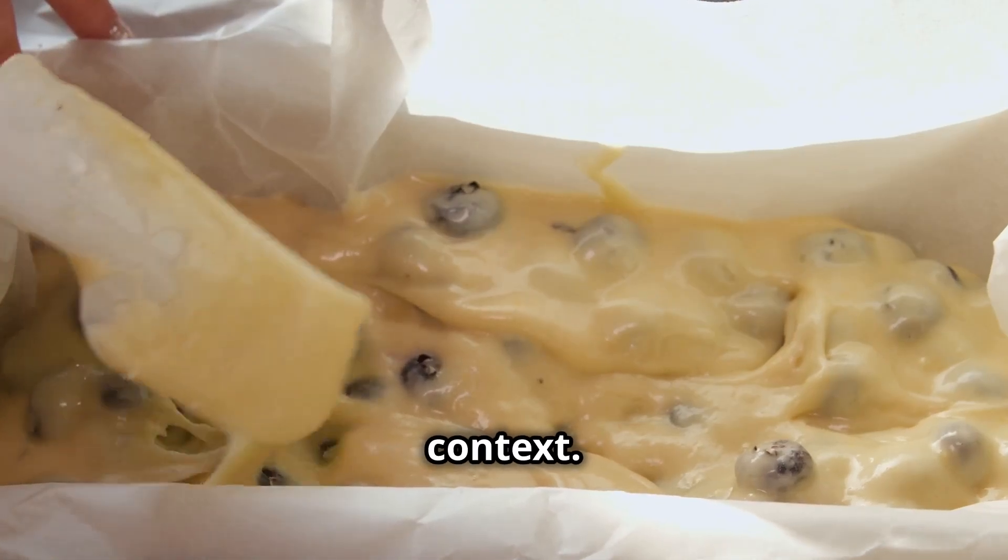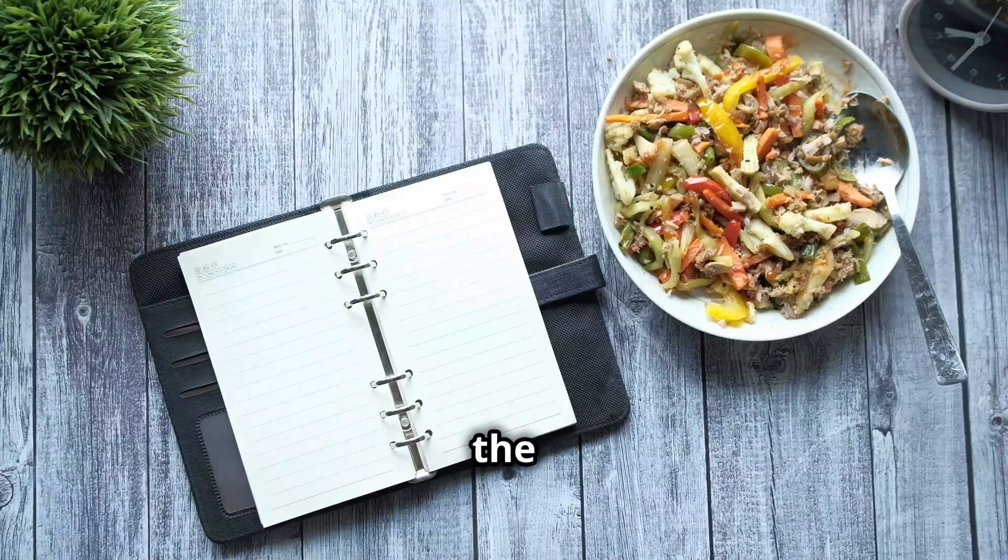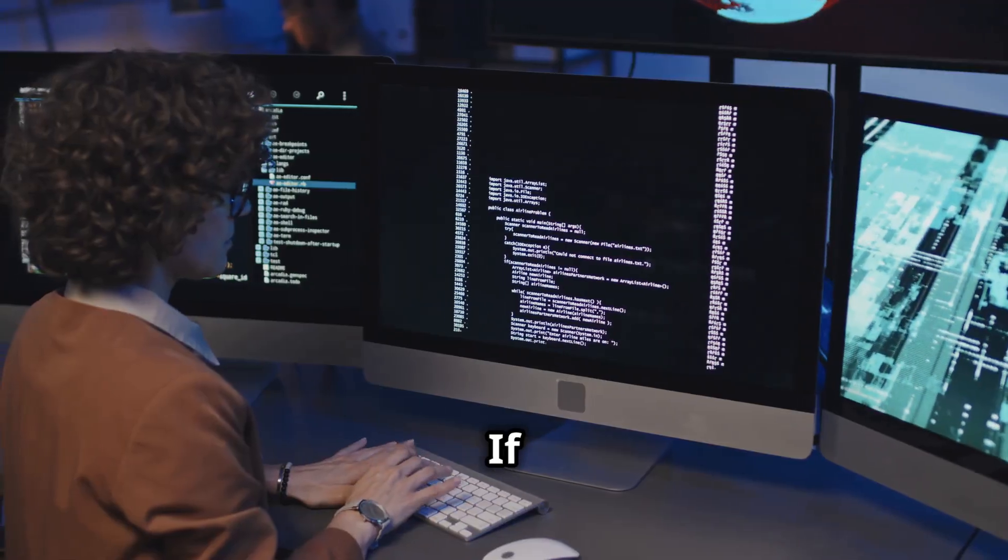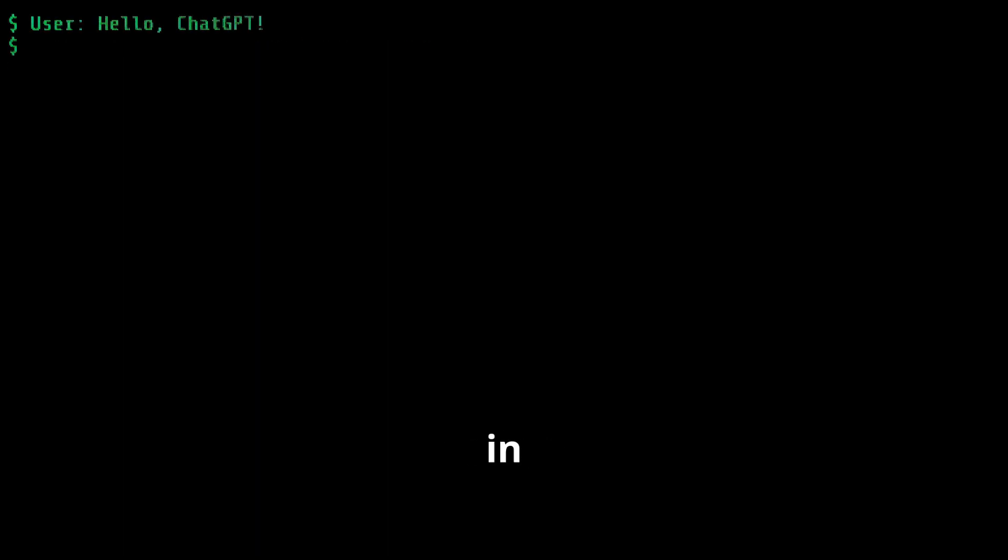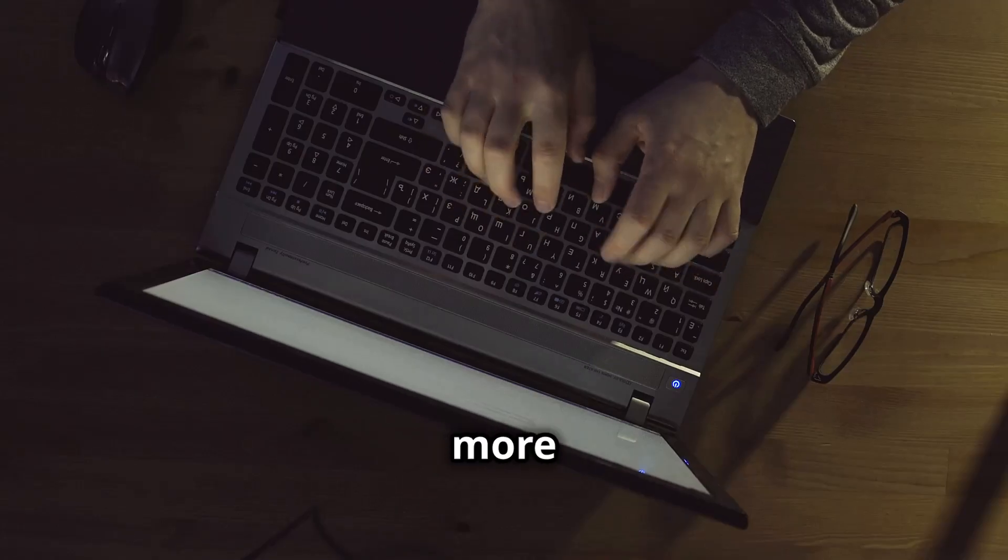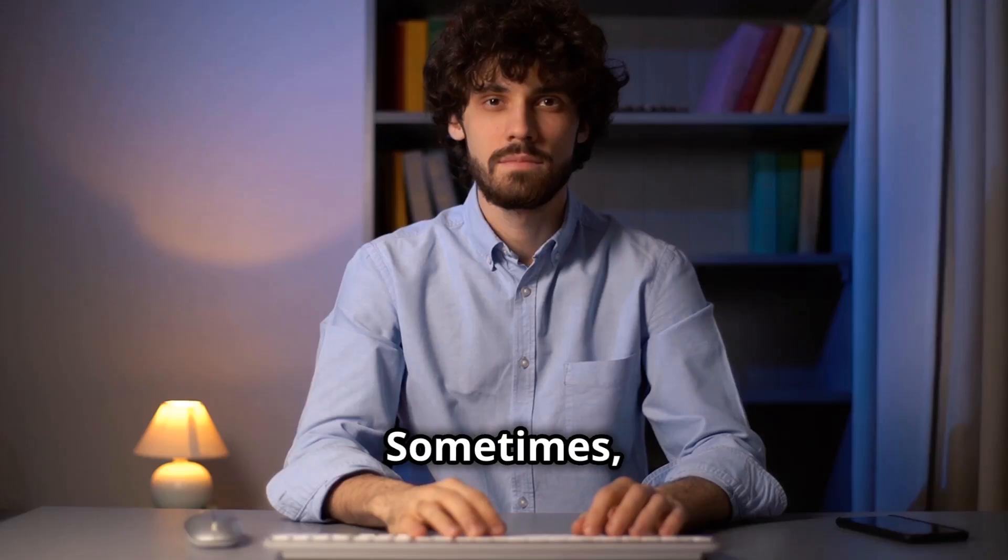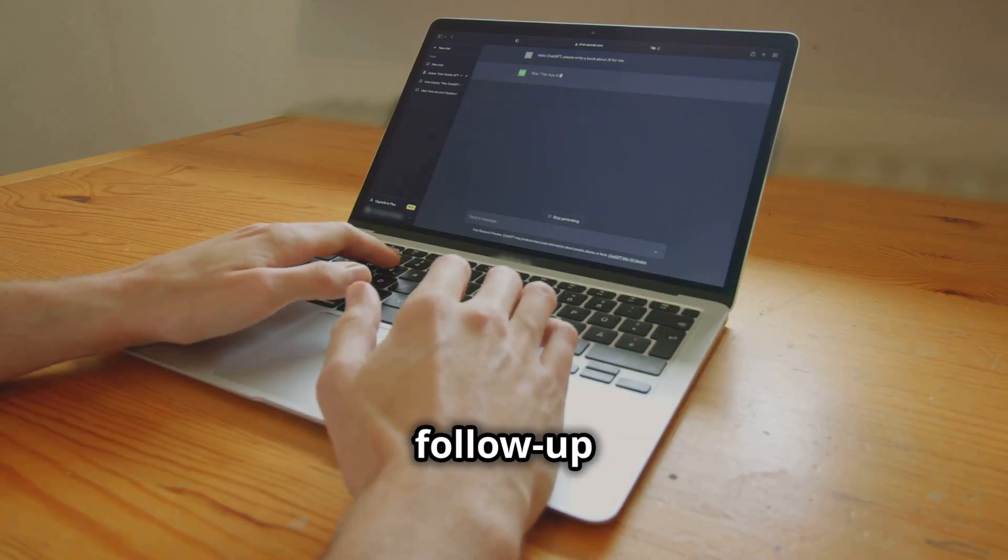Three, provide context. Give background information if it's relevant. Instead of what's the best diet, try what's the best diet for someone trying to lose weight with a sedentary lifestyle. Four, use constraints. If you need a specific format or limitation, include that in your prompt. For example, summarize this article in 100 words or less. Five, iterate and refine. Don't hesitate to rephrase or add more details to your prompts if the initial response isn't what you wanted. Six, ask follow-up questions. Build on the conversation to refine the response further.